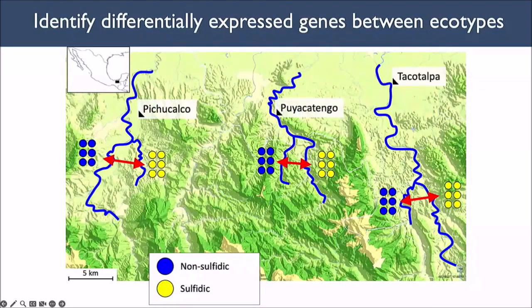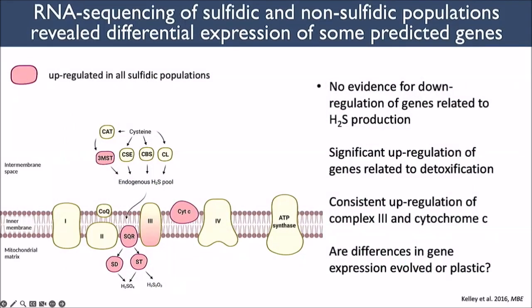We sampled non-sulfidic and sulfidic individuals and sequenced RNA from the gills of six individuals from each location — this was almost 10 years ago now. We asked what genes are differentially expressed between sulfidic and non-sulfidic populations and shared among all three population pairs, reasoning that anything shared across all three would be relevant to hydrogen sulfide adaptation rather than subtleties of any particular environment.